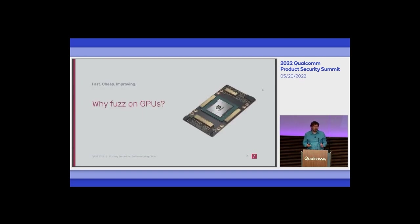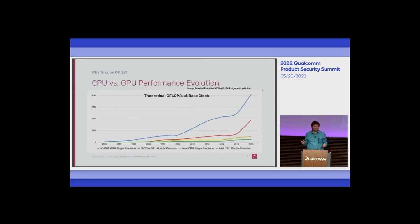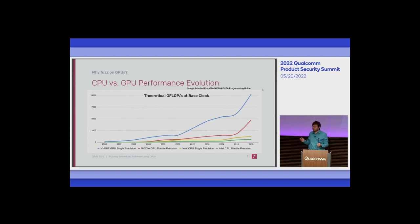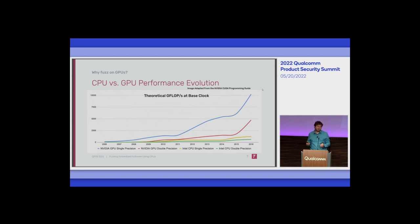First, why would you want to fuzz on GPUs? This is a graph of essentially throughput at base clock for GPUs versus CPUs. This graph stops in 2016 because the NVIDIA CUDA Programmer's Guide stopped including it, but it continues going like this. This graph is representative of every single problem bound by throughput — think cryptocurrency mining, physics simulations, password cracking — and this hockey stick graph only keeps diverging. GPUs are really, really good at having lots of throughput.